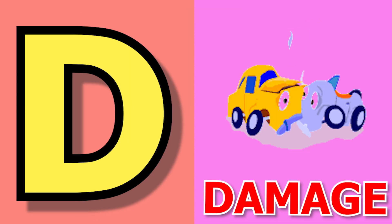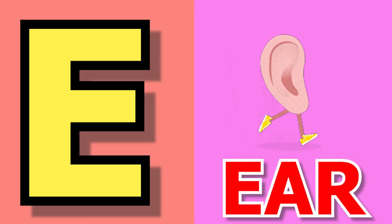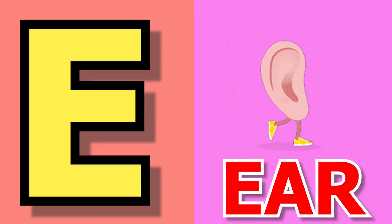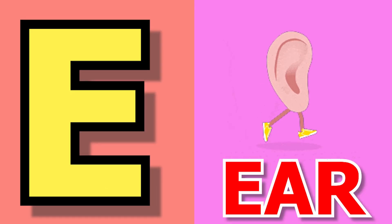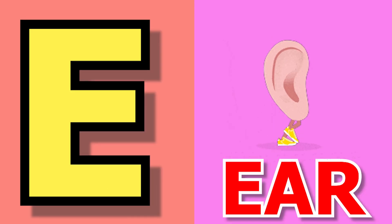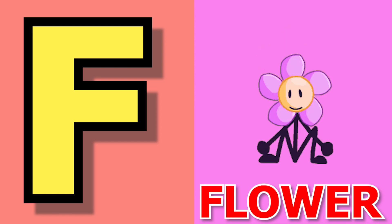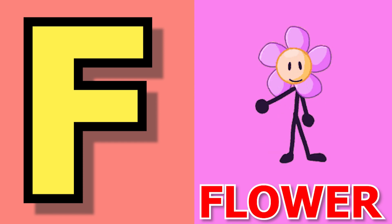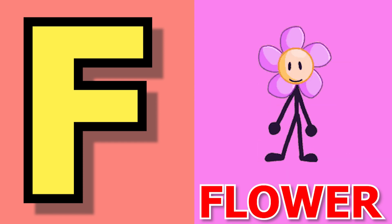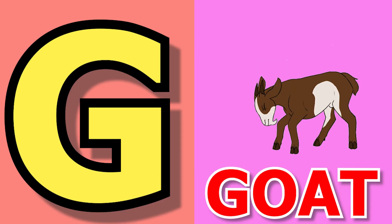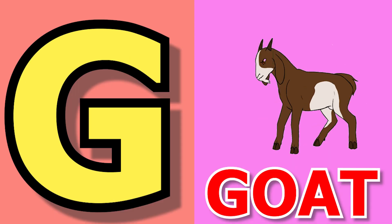B for diamond, diamond means hira. E for ear, ear means kaan. F for flower, flower means food.